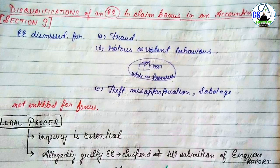Employee dismissed for fraud, riotous or violent behavior while in the premises, या for theft, misappropriation, and sabotage of the property - is not entitled for bonus for that accounting year.